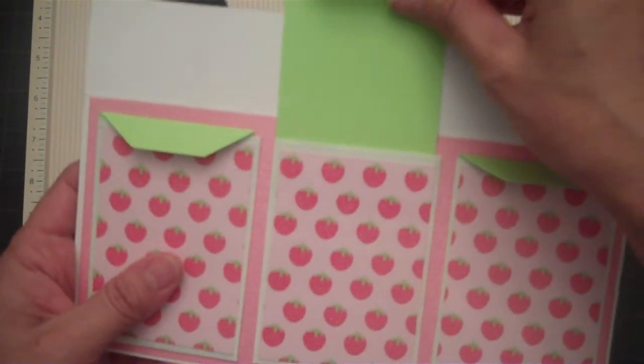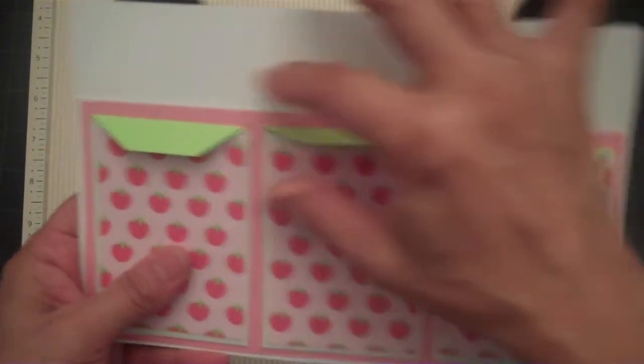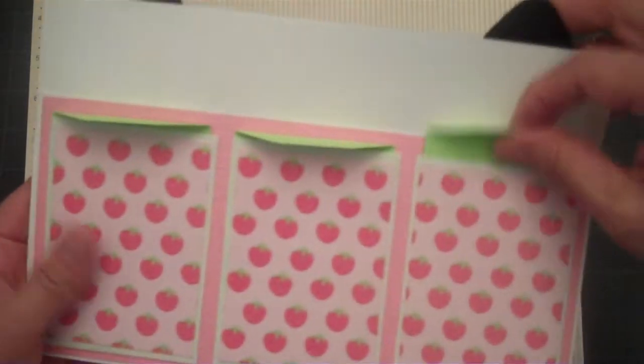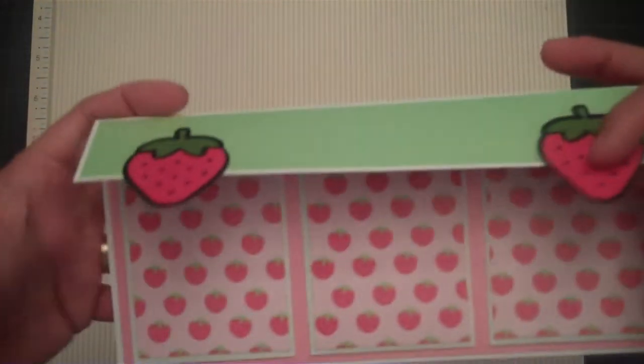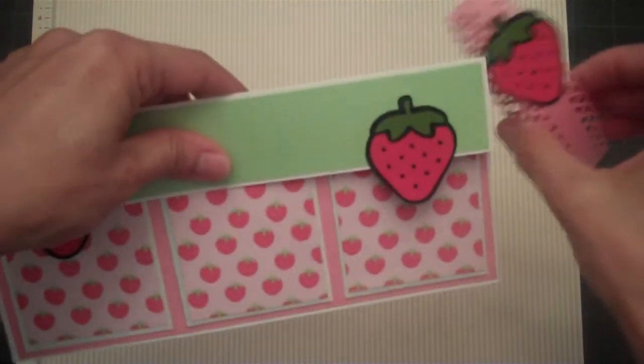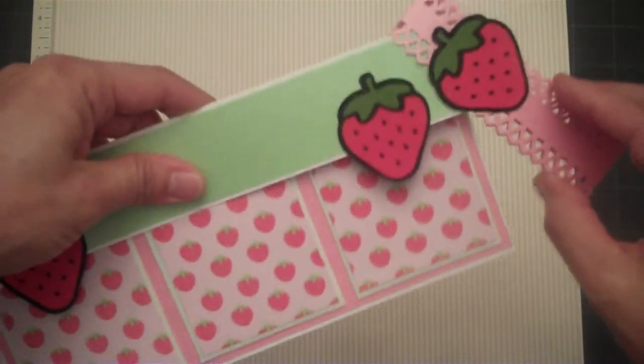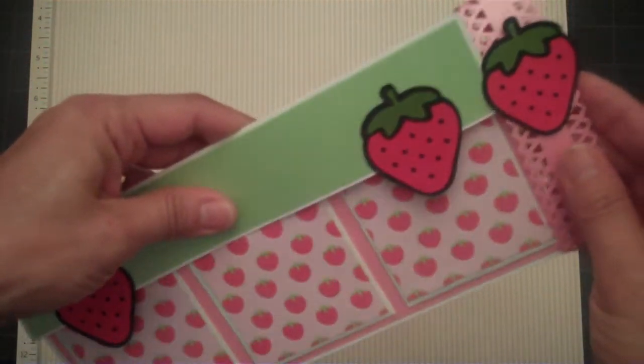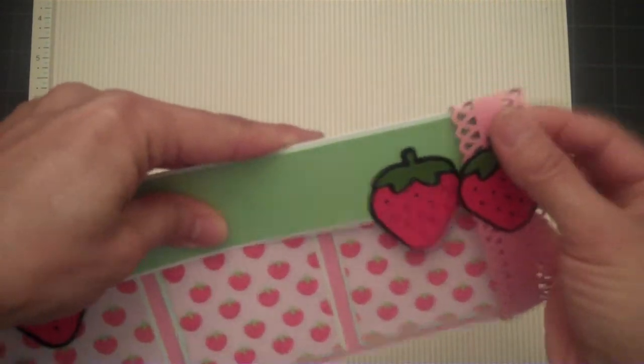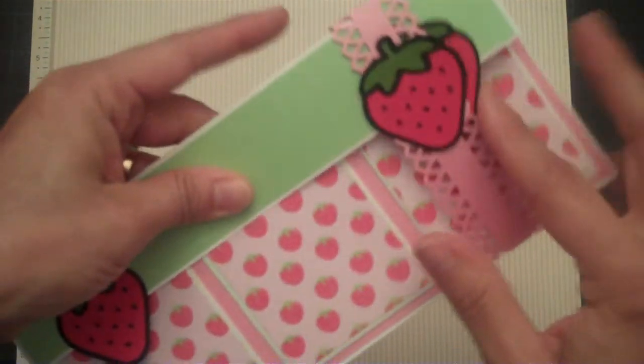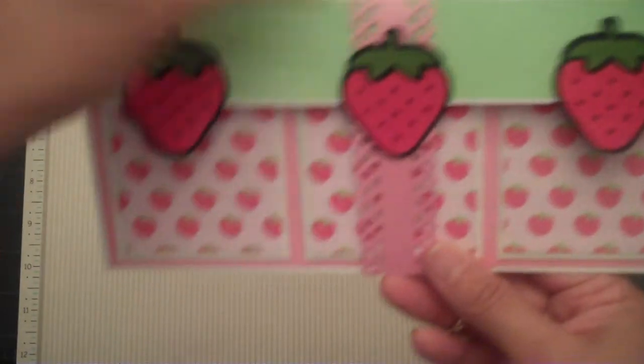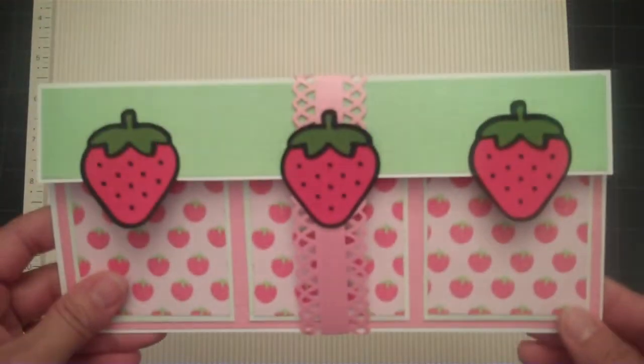You can add a gift card to the center and then write messages on each side. And then you just fold it back up and put the band back on. Slide it on and it keeps it all together. So I'll show you how to make that.